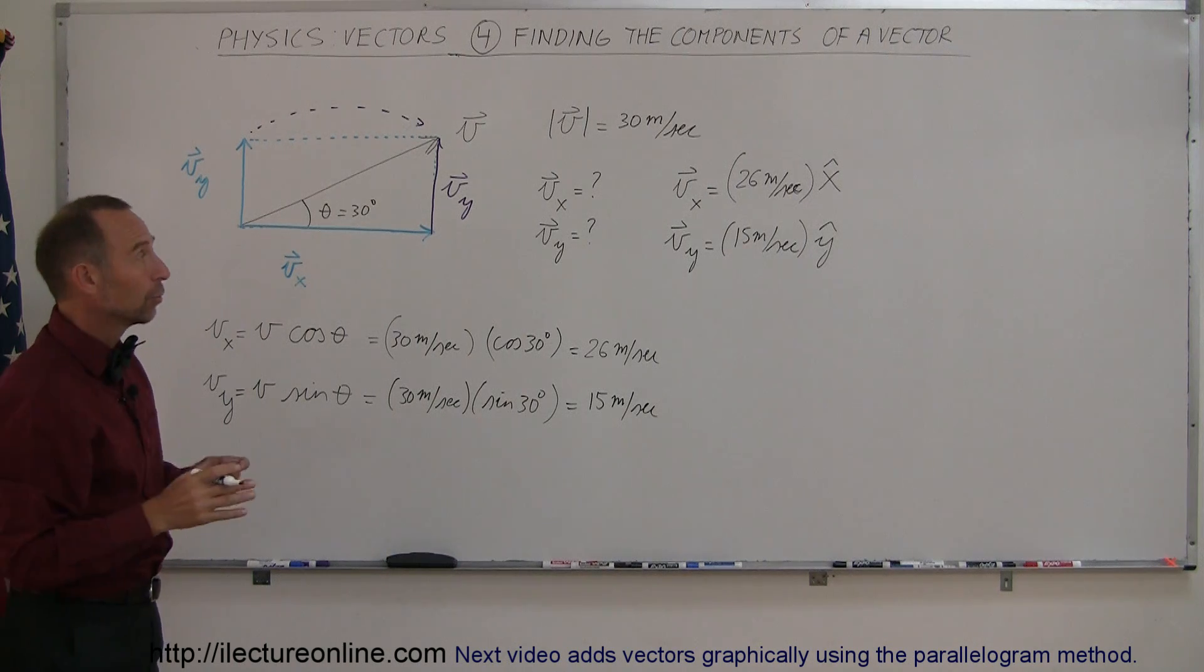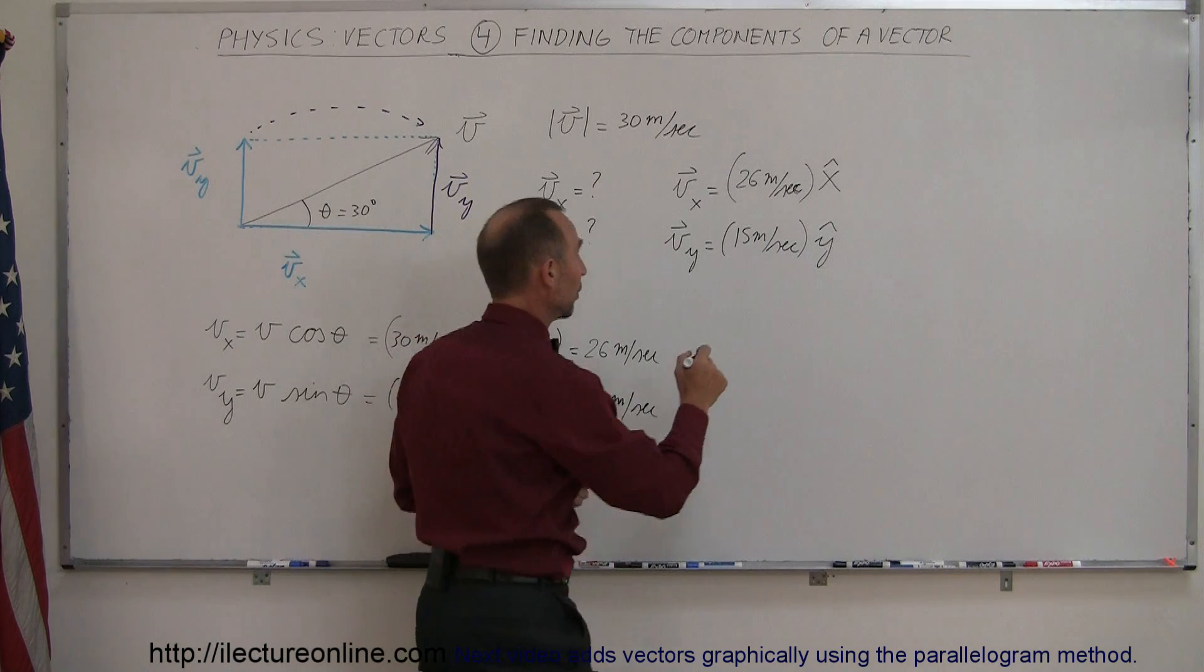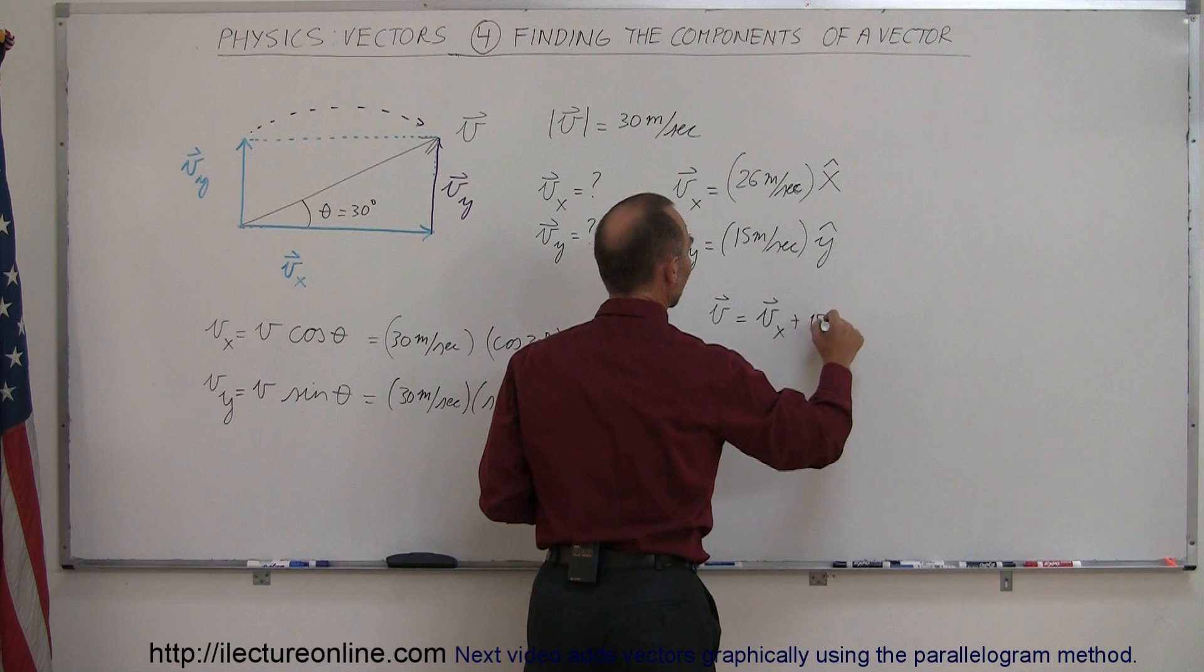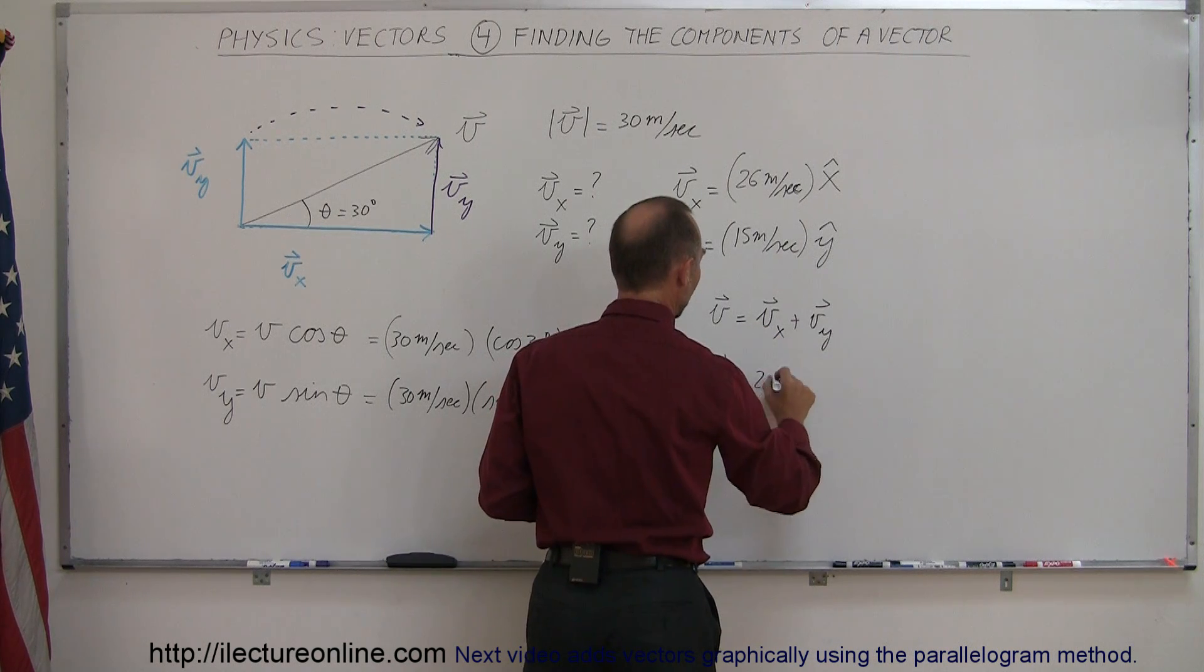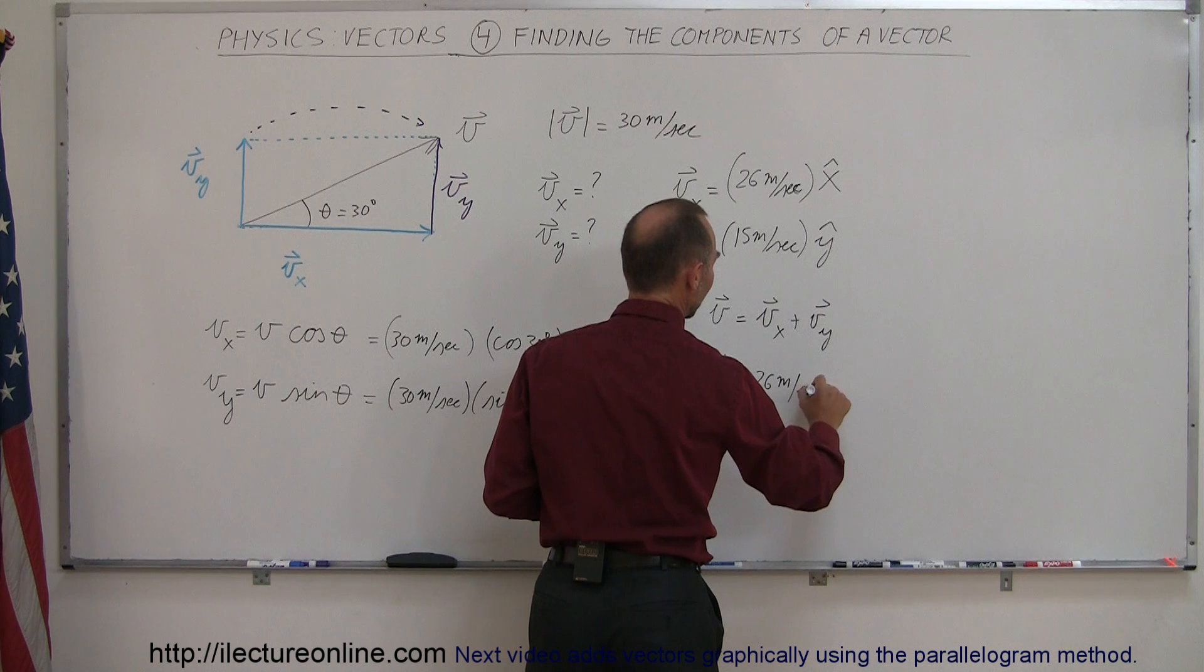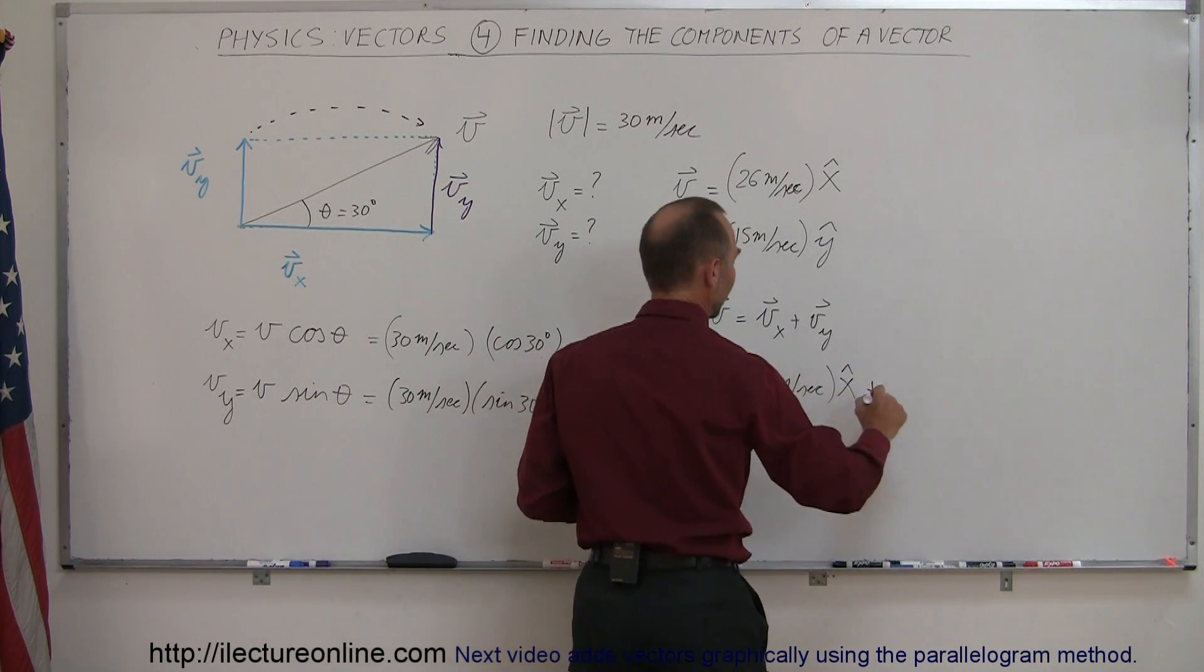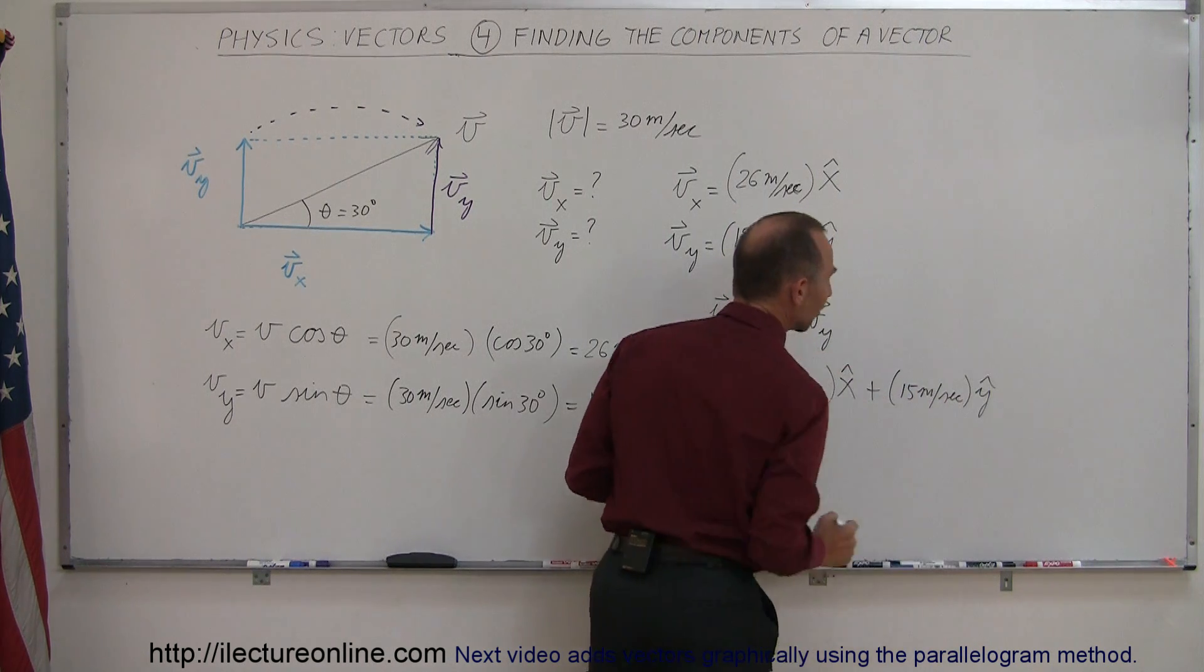Alright, now if I want to write the whole vector v, I can do that as a sum of its x and y components. So I can say that v is equal to v sub x plus v sub y. In other words, I could write v as 26 meters per second, which is the magnitude of the x component in the x direction, plus 15 meters per second in the y direction.